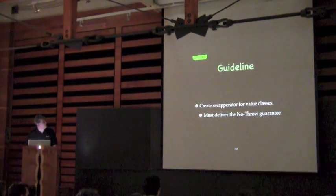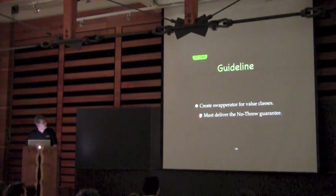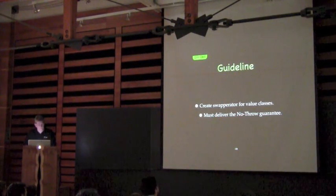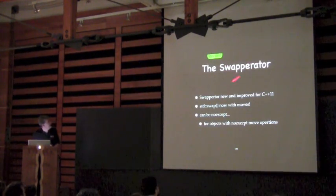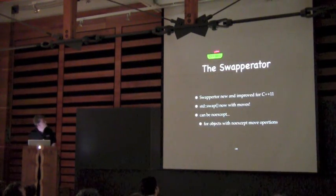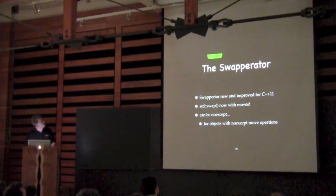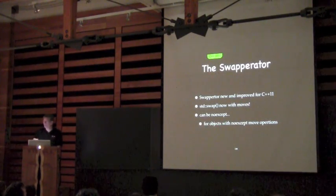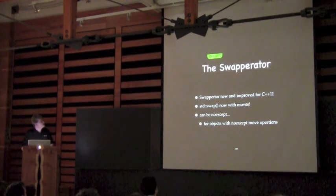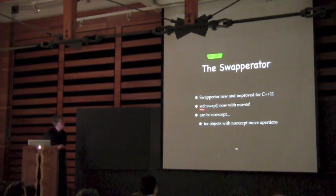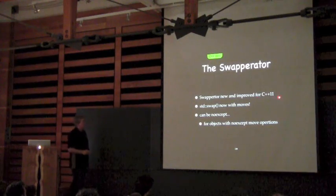So here's our guideline: create the swap operator for value classes — must deliver the no-throw guarantee. Now in 2011: swap is new and improved for C++11. The reason is that standard swap no longer does three copies — it's now a move construction followed by two move assignments.